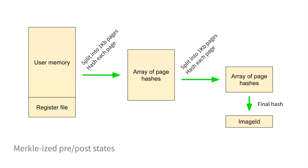And that basically tells us it's an efficient way to represent the verification of an entire memory image, which is currently about 192 megabytes. That's basically what an image ID is. I'll stop there for a second and see if there are questions or if I should explain that a little better.